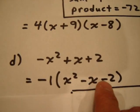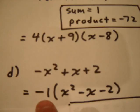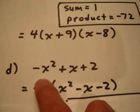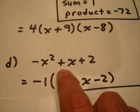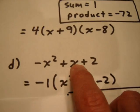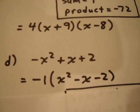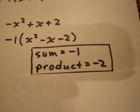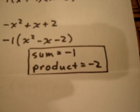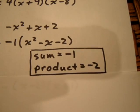So this becomes -1(x² - x - 2). It's a little awkward to see, perhaps, but think about it. Negative 1 times x² is -x². Negative 1 times -x is +x. Negative 1 times -2 is +2. So we have x² - x - 2. Now we want two numbers with a sum of negative 1 and a product of negative 2. Those two numbers are negative 2 and positive 1.